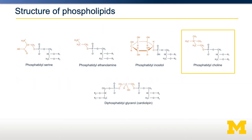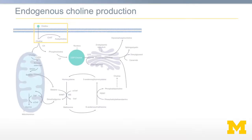Phosphatidylcholine is the molecule choline attached to a phospholipid, but choline can exist in our bodies in several other forms. The roles of choline depend on what choline can turn into. One role of choline is that it can be converted into the neurotransmitter acetylcholine.